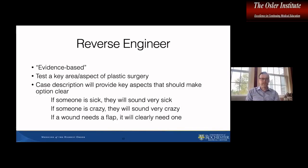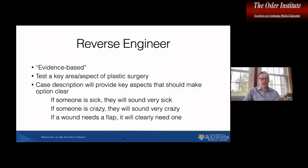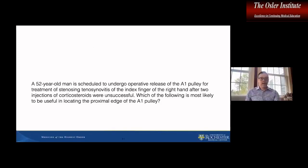You can try to reverse engineer this. This is supposed to be evidence-based and test key areas of plastic surgery. If we're talking about hand arthritis or treatment for different types of arthritis, you're usually going to be on the division between a key decision factor or treatment paradigm — for example, whether you can do a PRC or a four-corner fusion for SLAC wrist. In terms of reconstructive topics, if someone is sick, they're going to sound really sick in the vignette. If a wound needs a flap, it will clearly need one. If a finger is not replantable, it will clearly not be replantable.